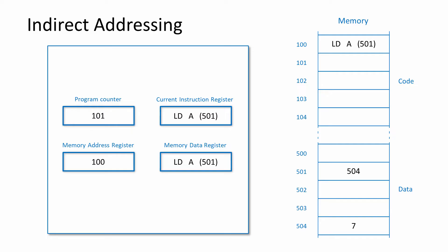If the operand is a memory address of a location that contains the effective memory address, the mode is known as indirect addressing. This is slower than direct addressing because it means accessing the memory more than once, but it does make more memory locations addressable than otherwise might be. As indicated by the parentheses, this instruction, which has just been fetched, will look in memory location 501 for the address of the location that contains the data it needs. During the execution of this instruction, the memory has to be accessed twice.